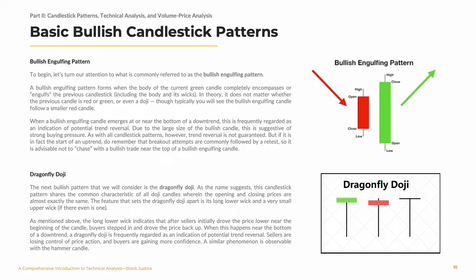The next bullish pattern that we will consider is the dragonfly doji. As the name suggests, this candlestick pattern shares the common characteristic of all doji candles, wherein the opening and closing prices are almost exactly the same. The feature that sets the dragonfly doji apart is its long lower wick and a very small upper wick, if there even is one. As mentioned above, the long lower wick indicates that after sellers initially drove the price lower near the beginning of the candle, buyers stepped in and drove the price back up. When this happens near the bottom of a downtrend, a dragonfly doji is frequently regarded as an indication of potential trend reversal. Sellers are losing control of price action and buyers are gaining more confidence.